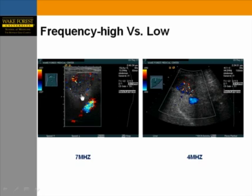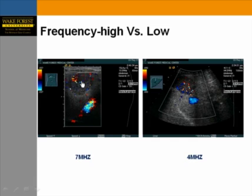Here are two examples. At 7 MHz, scanning a liver mass shows vascularity mainly in the superficial component. Using a lower frequency 4 MHz probe on the same patient and plane, more color Doppler is visible in the center and deepest components of the mass.